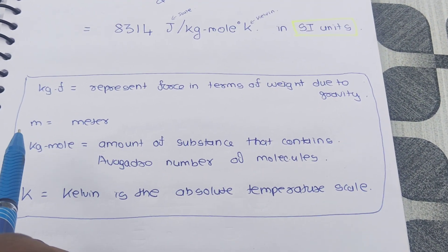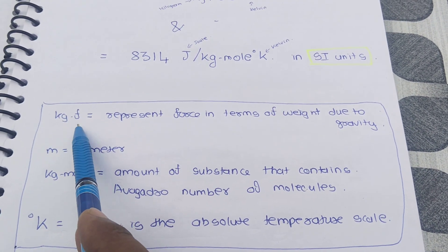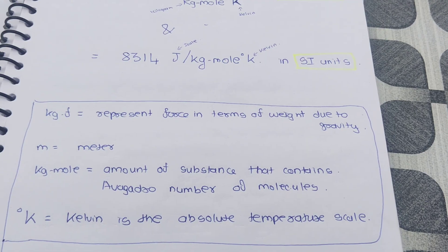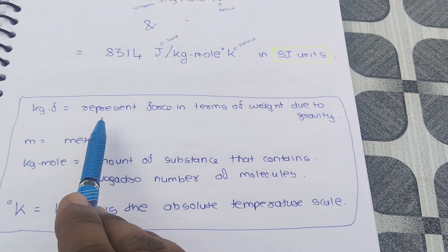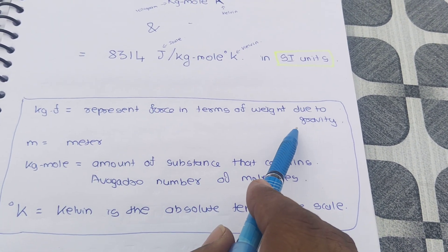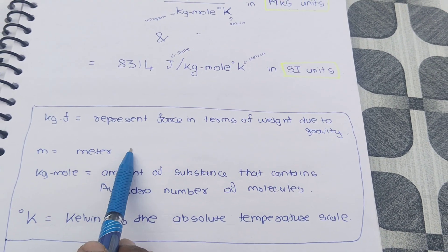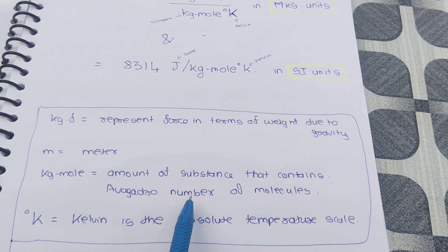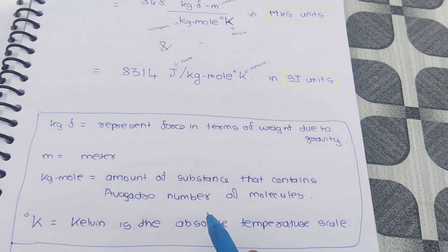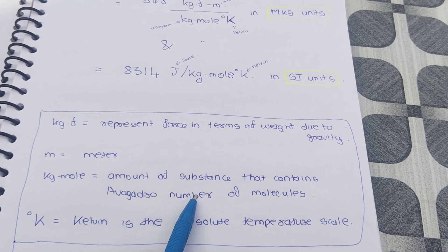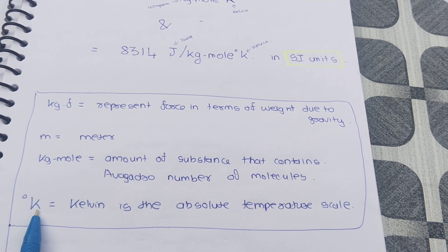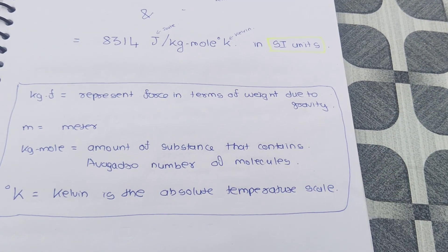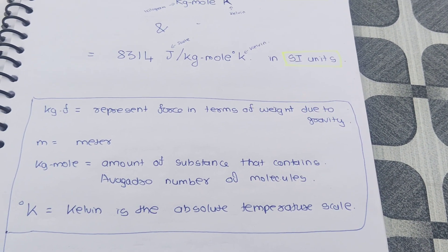Kilogram-force represents force in terms of weight due to gravity. Meter is the unit of length. Kilogram-mole is the amount of substance that contains Avogadro's number — approximately 6.022 × 10²³ — of molecules. Degree Kelvin is the absolute temperature scale; temperature is measured in Kelvin or degree Celsius.